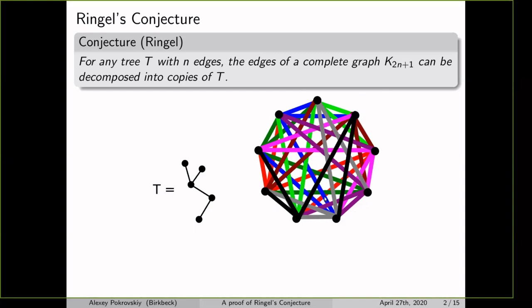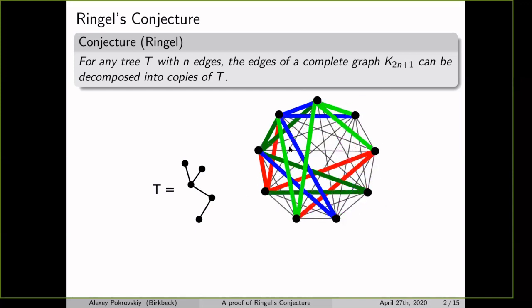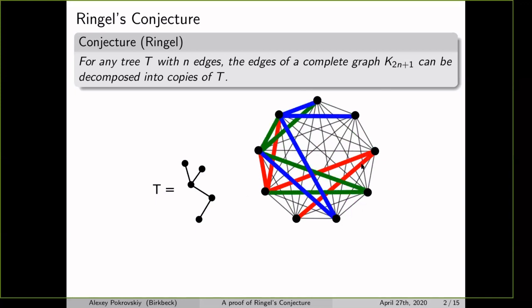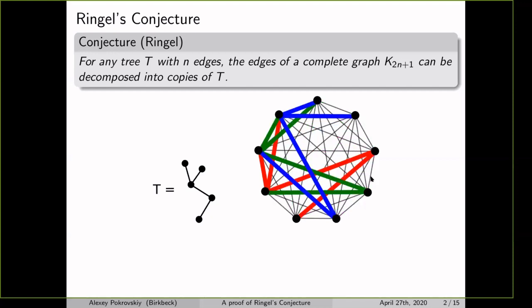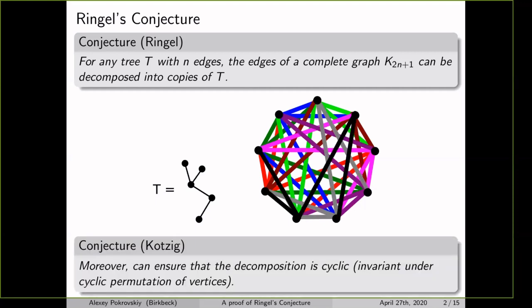How did I find the decomposition in this example? I found one tree and then rotated it 9 times to get 9 disjoint copies. This is what's called a cyclic decomposition of the complete graph. There's a stronger conjecture by Kotzig that you can always find a cyclic decomposition by copies of every tree — where cyclic means the decomposition is invariant under some cyclic permutation of the vertices. These are the two conjectures the talk will be about.